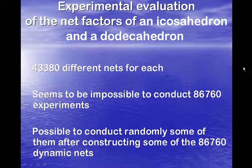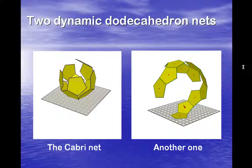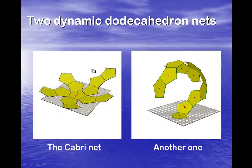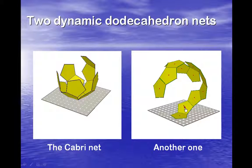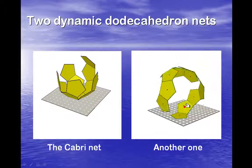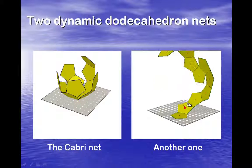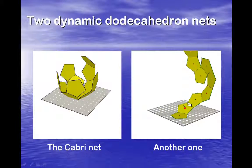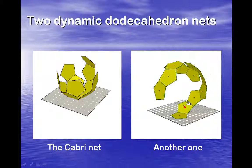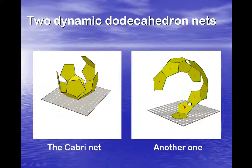Is it possible to program in some software an analytic proof? I don't know for the moment. Here is the cabrinet of the dodecahedron, and here is another one I've constructed. I've used a three-key construction, which will be presented in my workshop at ATCM.